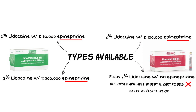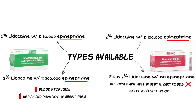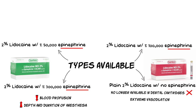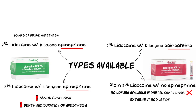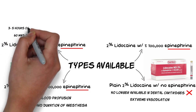Inclusion of epinephrine in the local anesthetic produces a decrease in blood perfusion, leading to decreased bleeding in the area, and the drug is absorbed into the cardiovascular system much more slowly, leading to an increase in depth and duration of local anesthesia. The solution with 1 part per 50,000 parts of epinephrine provides approximately 60 minutes of pulpal anesthesia and 3 to 5 hours of soft tissue anesthesia.